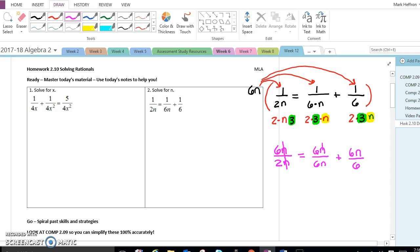N cancels with N here and here. 6 cancels with 6, making 1. So this is just 1. 6 cancels with 6, leaving an N. So I have an N. And over here, 6 divided by 2 is 3. So now I'm just solving 3 equals 1 plus N.